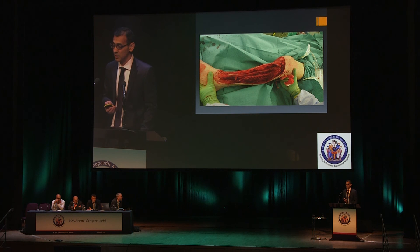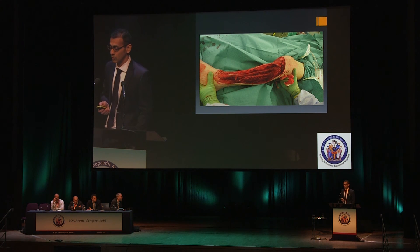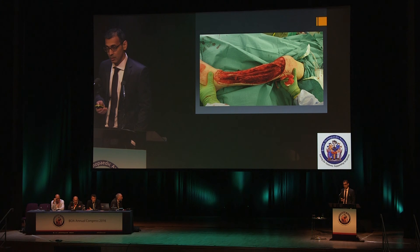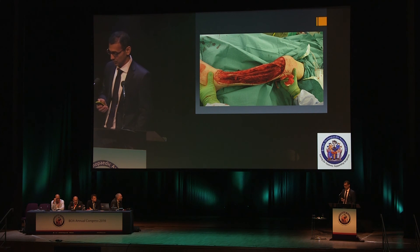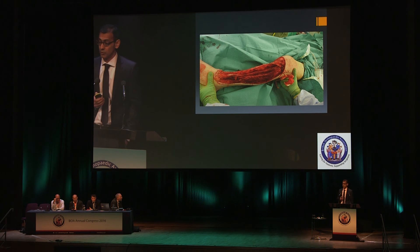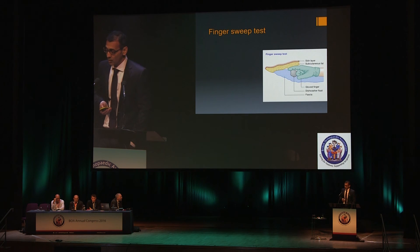For this patient this is the appropriate debridement. As you can see my Zone 2 estimate wasn't quite accurate — the involved zone was a lot more than that — but all the fascia is gone and she has healthy muscle on the base. After six to seven days this lady will be ready for plastic surgical reconstruction. On the sides you can see the Zone 3 exploratory incisions, which have been joined up afterwards.